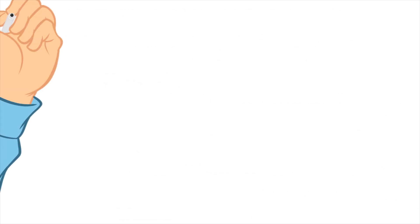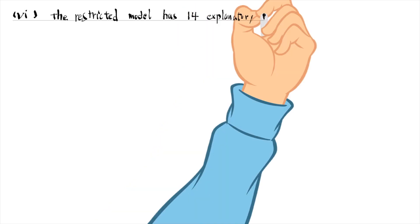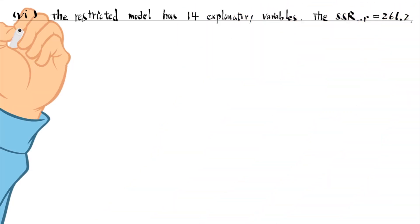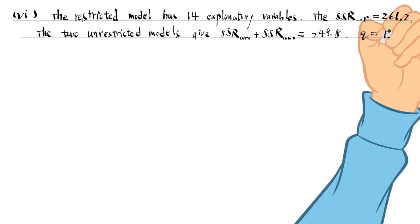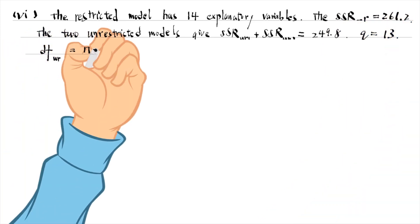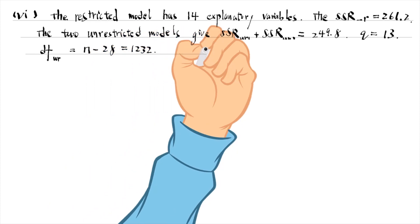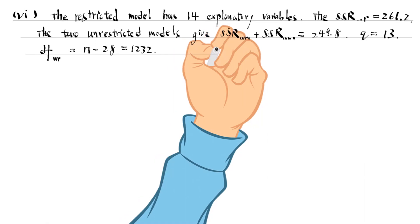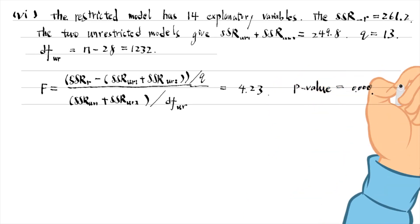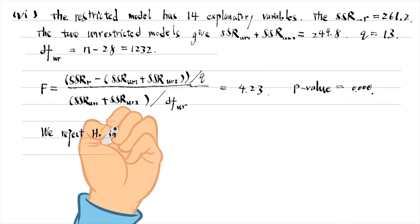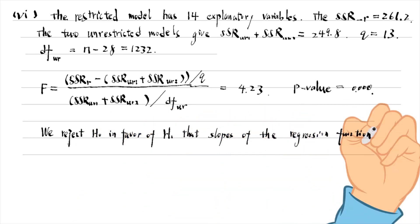For part 6, the restricted model has 14 explanatory variables. The sum of squared residuals from the restricted model is 261.2. The two unrestricted models give a sum of squared residuals of 249.8. The number of restrictions Q equals 13. The degrees of freedom in the unrestricted model is sample size minus 28, that is 1,232. The Chow F-statistic is 4.23 and its p-value is 0 to 3 decimal places. We reject the null hypothesis in favor of the alternative that slopes of the regression function differ across men and women.